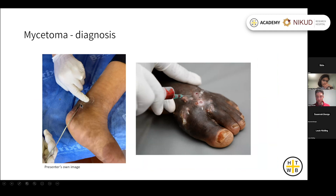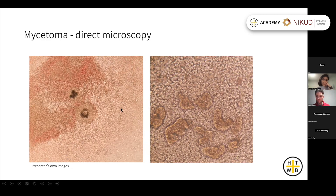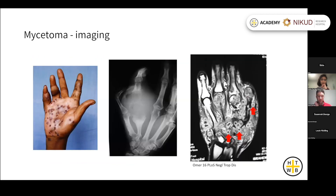In terms of collecting a sample, you can often express pus or grains out through the sinus tracts and collect them directly, or aspirate from the mass. On direct microscopy you might see small grains of Nocardia and lots of white blood cells. Mycetoma can invade deeper into bone, so imaging is important — X-ray can show cavitating lesions, and MRI shows characteristic ring structures.